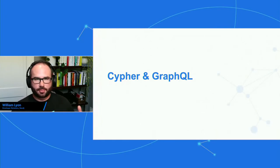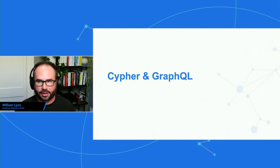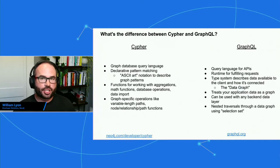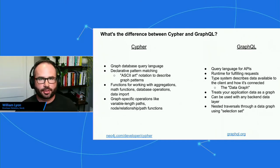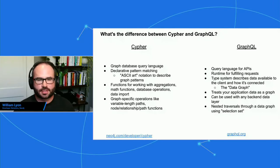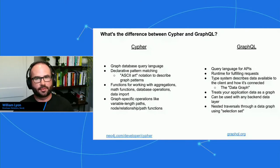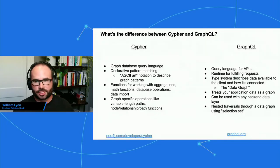Let's compare and contrast Cypher and GraphQL. Cypher is a graph database query language with declarative pattern matching using ASCII art notation to define graph patterns. Like any other database query language, it has functions for aggregations, math, database operations like creating indexes, and data import like pulling in CSV files. And because it's a graph database query language, we also have graph-specific operations like the variable length path operator and functions for working with nodes, relationships, and paths.